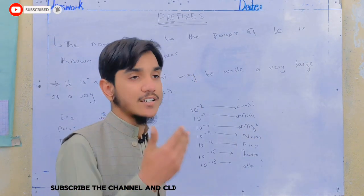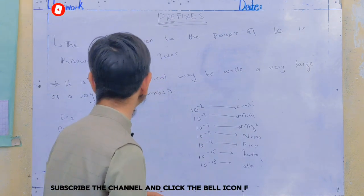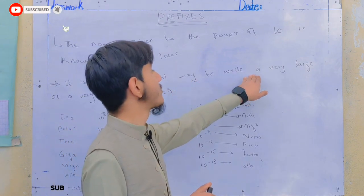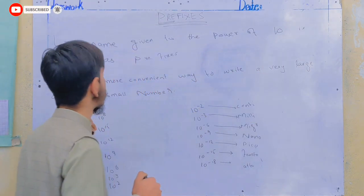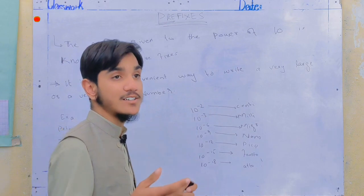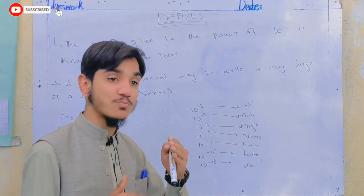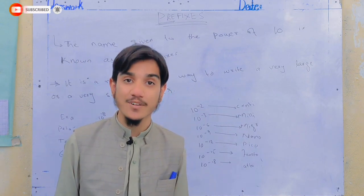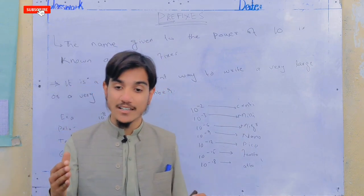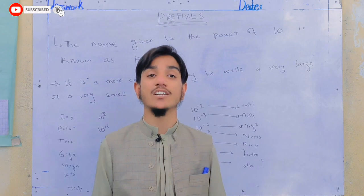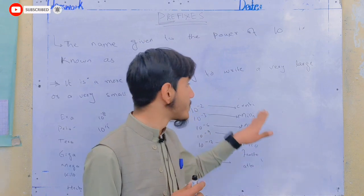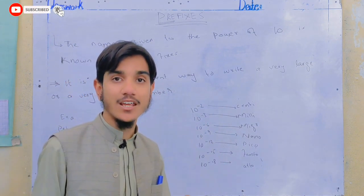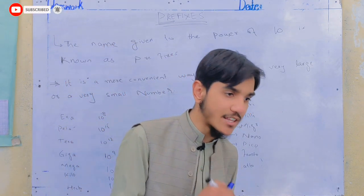If you look at the power of 10, you will notice that it is more convenient to write a very large or very small number in this form. Now, if you want to represent a small number using a power of 10, then you can use a negative exponent, or you can use a prefix.